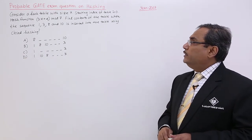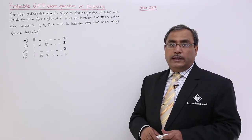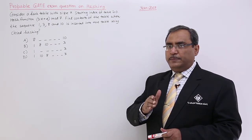Consider a hash table with size 7. Starting index of the table is 0. That means the size is 7, index starting with 0, that means 0 to 6.